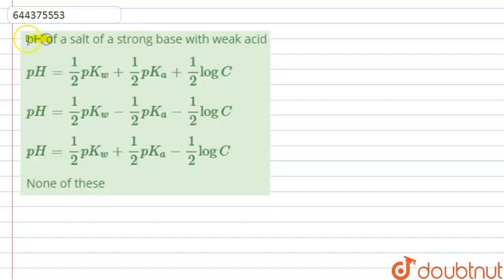Hello friends. The question is: find the pH of a salt of a strong base with a weak acid. The first option is pH = half pKw + half pKa + half log C. The second option is pH = half pKw - half pKa - half log C. The third option is pH = half pKw + half pKa - half log C.